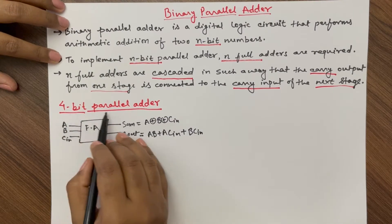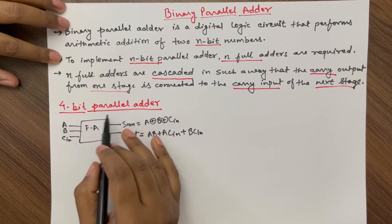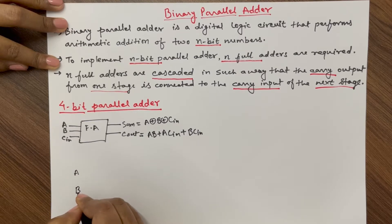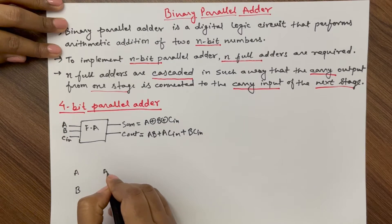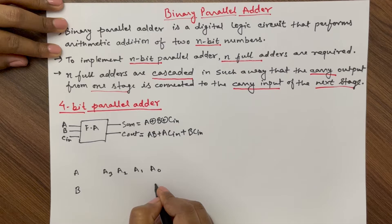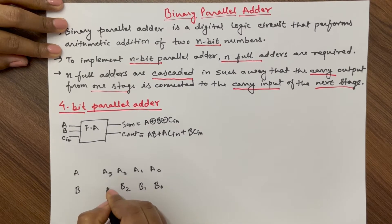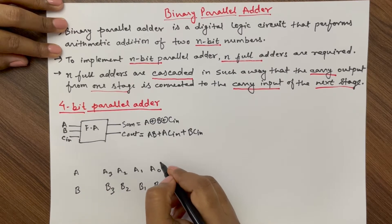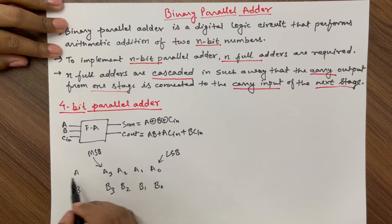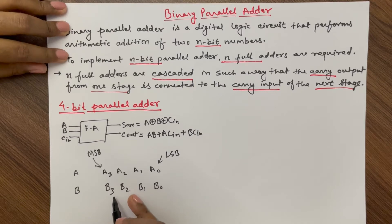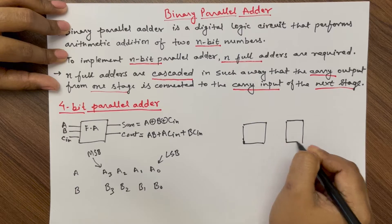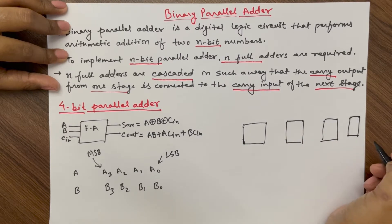Now we need to design this four-bit parallel adder, which will add two four-bit numbers. Let us take two four-bit numbers: the first number is A and the second number is B. A has four bits: A3, A2, A1, and A0, and B has four bits: B0, B1, B2, and B3. A0 and B0 are called the LSB of these two numbers. For adding these two four-bit numbers we need four full adders.